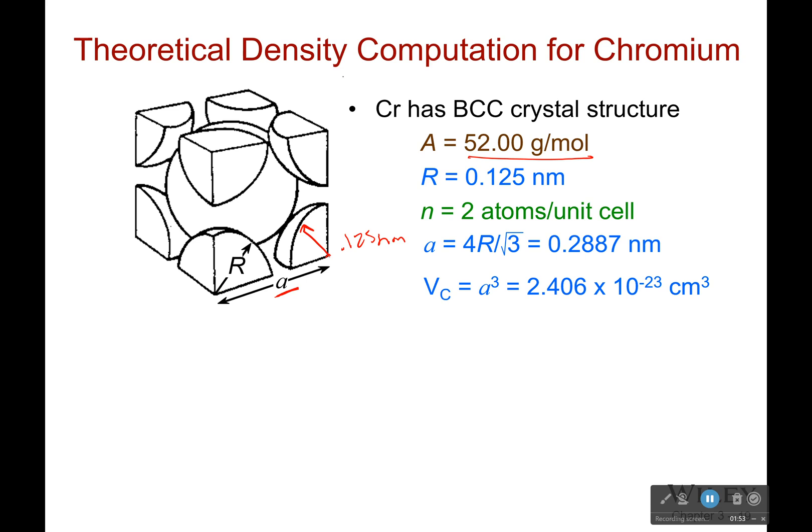How many atoms are in a unit cell? Well, this is a body centered cubic, so you'd have to know that for chromium. So it'll be two atoms per unit cell. And then since we know what the radius is we can plug that into our equation for A. And we get this value for what A is equal to in terms of radius. We do that from our work when we do the atomic packing factor.